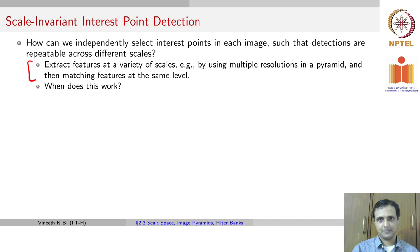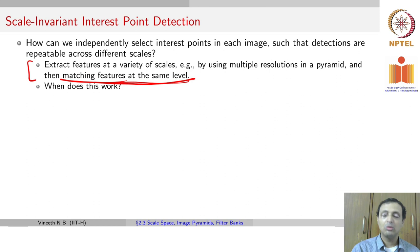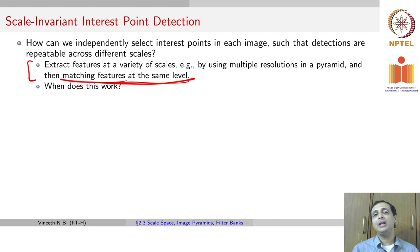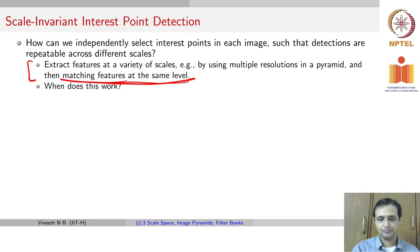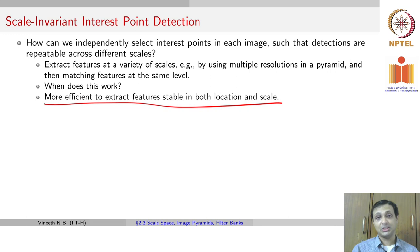However, matching features at the same level only compares Harris cornerness at the same scale. To be truly scale invariant, we need to compare the Harris cornerness measure at a different scale in one image with the Harris cornerness measure at a different scale in the next image. So we try to extract features that are stable in both location and scale.